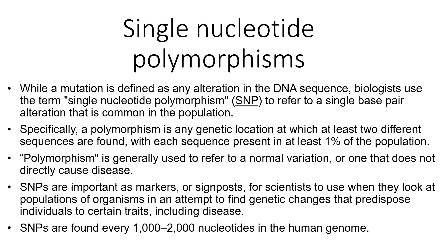The final topic is single nucleotide polymorphisms (SNPs). While a mutation is any alteration in DNA sequence, biologists use the term SNP to refer to a single base-pair alteration that is common in the population. A polymorphism is any genetic location where two different sequences are found, each present in at least one percent of the population. Polymorphism generally refers to a normal variation that does not directly cause disease. SNPs are important markers for scientists studying populations of organisms to find genetic changes that predispose individuals to certain traits, including disease. In the human genome, SNPs are found every 1,000 to 2,000 nucleotides.